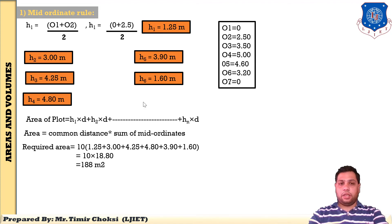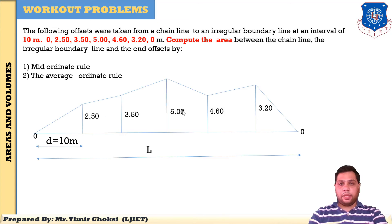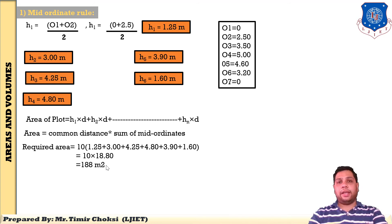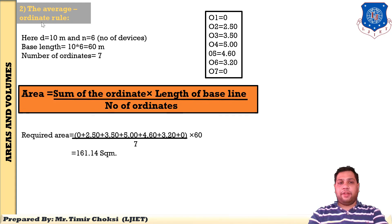Similarly find h2, h3, h4, h5, and h6. After finding all mid ordinates, put the values into the equation: Area = common distance × sum of mid ordinates = 10 × (1.25 + 3.0 + ... + 1.60), and you get the required area. You have considered the irregular shape boundary, replaced it with short straight boundaries, and found the area using the mid ordinate rule.